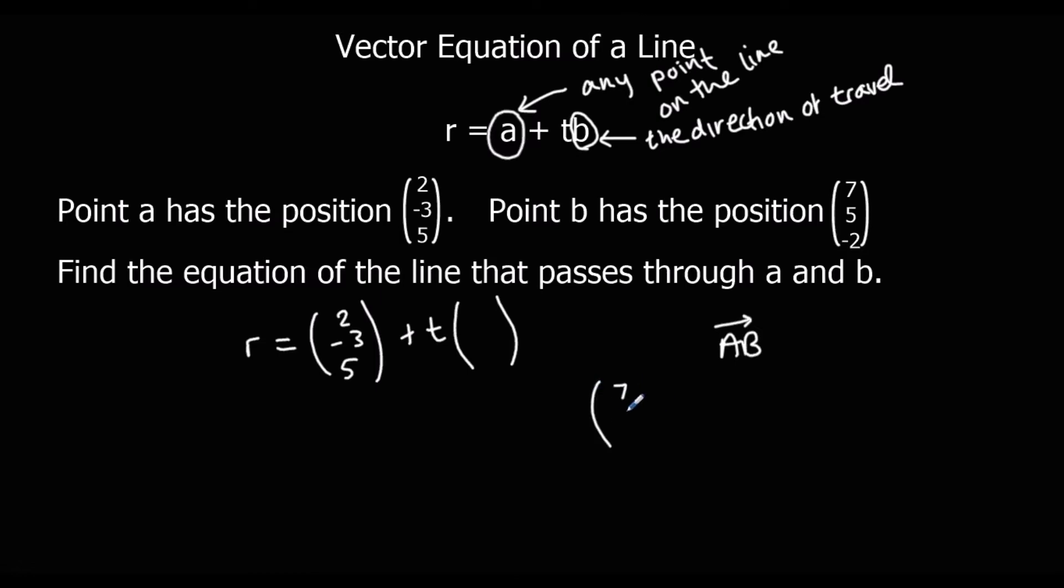So (7, 5, -2) take away (2, -3, 5). 7 minus 2 is 5, 5 take away negative 3 is 8, and negative 2 take away 5 is negative 7.